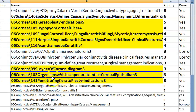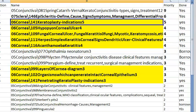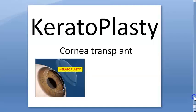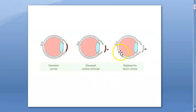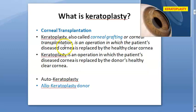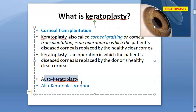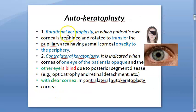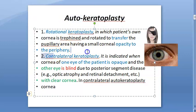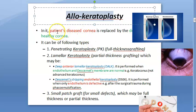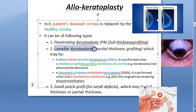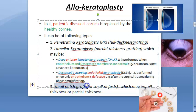Keratoplasty is corneal transplant. Types: autokeratoplasty (rotational — turning the same person's cornea; contralateral — taking cornea from the blind eye) and allokeratoplasty (donor cornea replaces diseased cornea). Penetrating keratoplasty is full-thickness grafting. Lamellar keratoplasty is partial-thickness: DALK (deep anterior lamellar keratoplasty) changes the anterior part; DSEK (Descemet stripping endothelial keratoplasty) replaces only the endothelium.